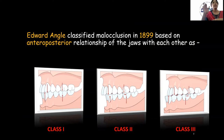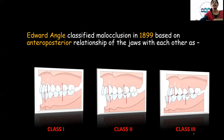In a Class 1 malocclusion, the mesiobuccal cusp of the maxillary molar occludes in the buccal groove of the mandibular molar. In Class 2, it is the distobuccal cusp which occludes in the buccal groove of the mandibular first molar. In Class 3, the mesiobuccal cusp of the maxillary molar occludes between the mandibular first and second molar.